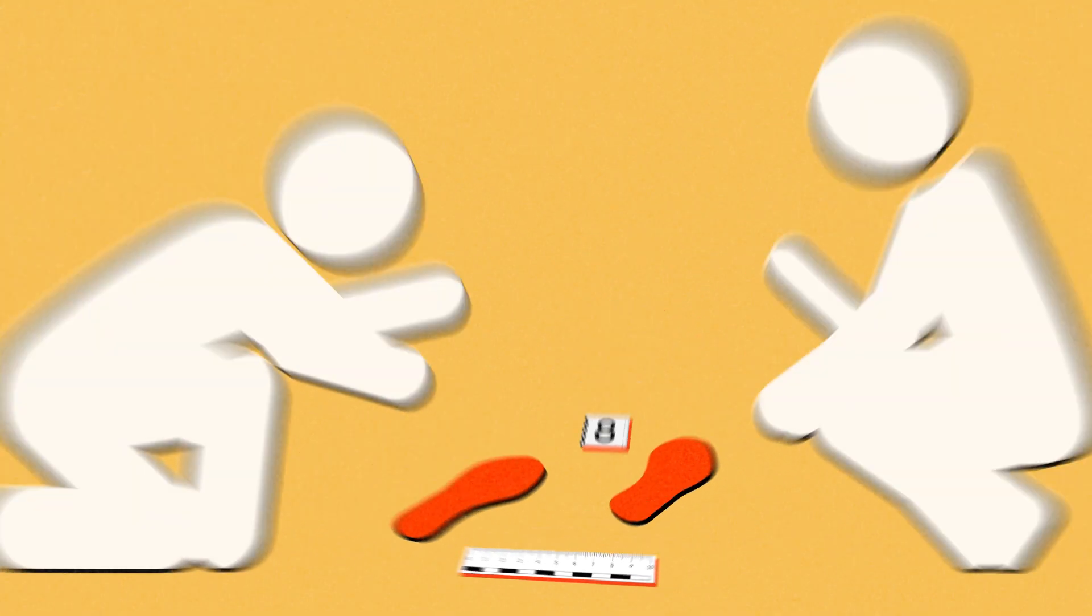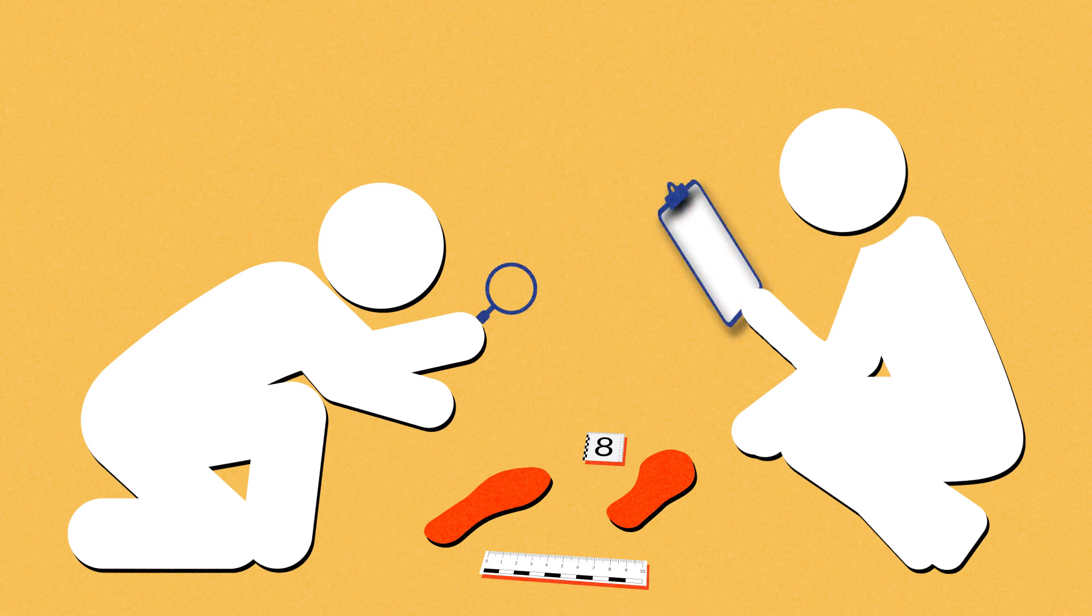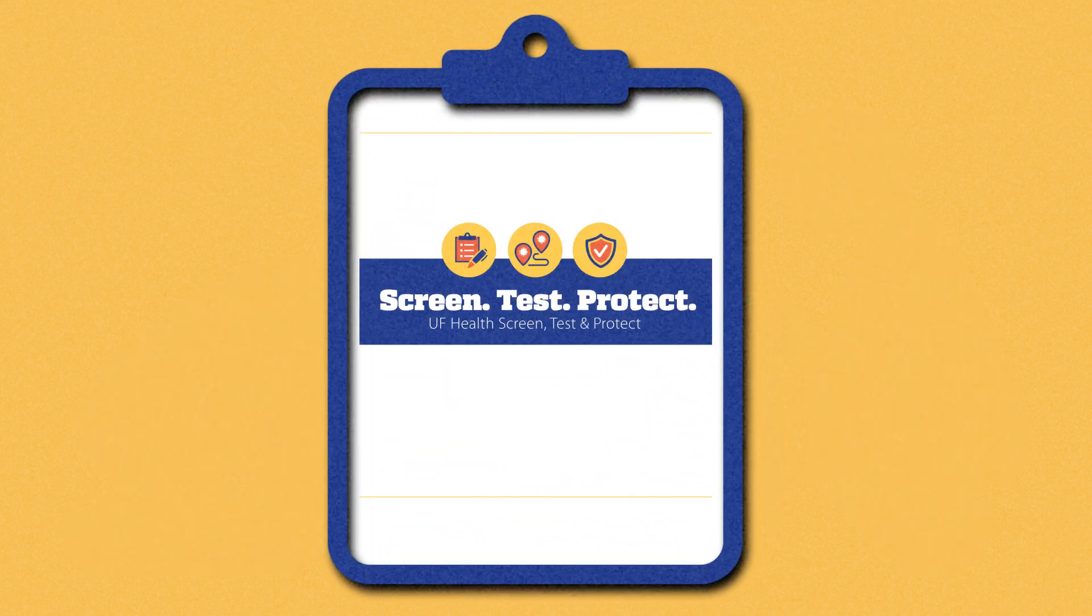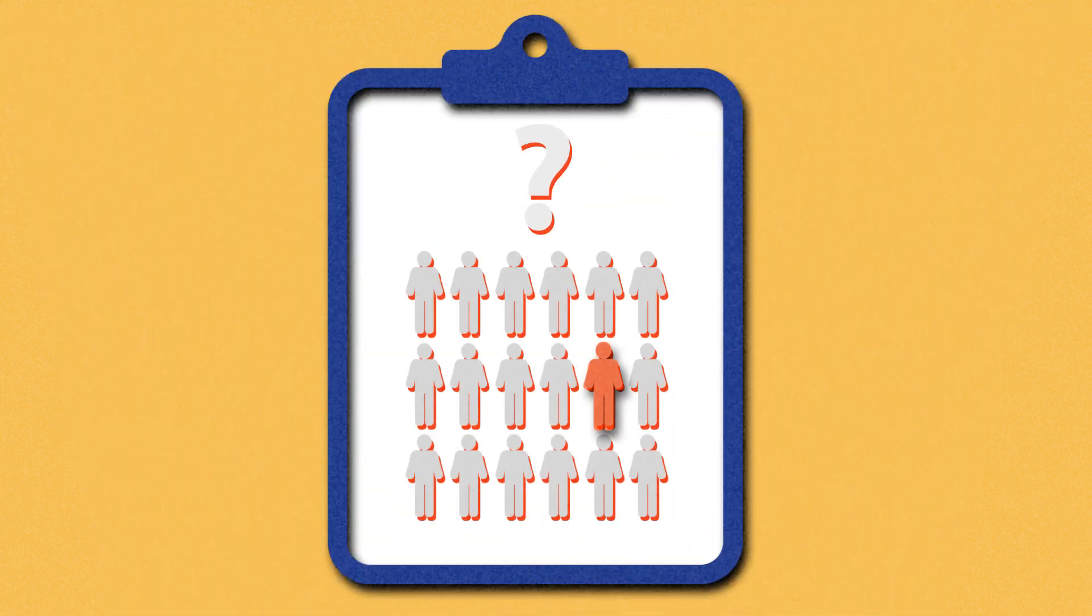The gumshoes here are epidemiologists and public health specialists determined to arrest the spread of a virulent virus. The tool they use is as old as the study of infectious disease, called UF Health Screen, Test and Protect, and can help answer this question: Who among us is infected?